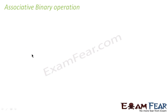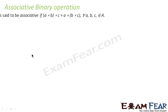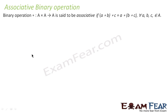Now let's understand associative binary operation. A binary operation is called associative if A★(B★C) is equal to (A★B)★C. Please note that not all operations are associative.